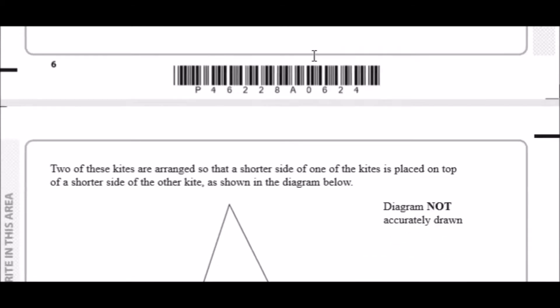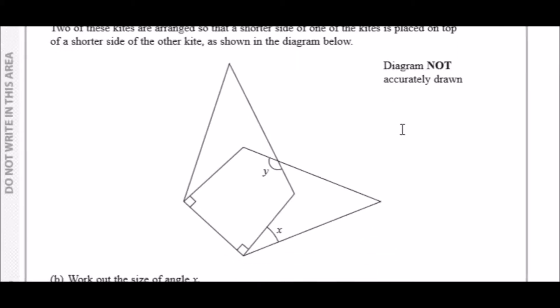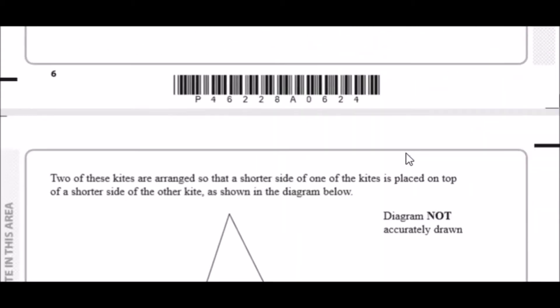Part b: two of these kites are arranged so that the shorter side of one of the kites is placed on top of the shorter side of the other kite as shown below. These are the same kites by the way, they're both ABCD kites. Just to make it clear, I think it's best we just label it right now.